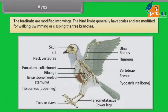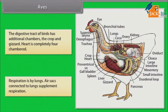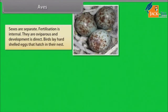The forelimbs are modified into wings. The hind limbs generally have scales and are modified for walking, swimming or clasping tree branches. The digestive tract of birds has additional chambers: the crop and gizzard. Heart is completely four-chambered. Respiration is by lungs. Air sacs connected to the lungs supplement respiration. Sexes are separate. Fertilization is internal. They are oviparous and development is direct. Birds lay hard-shelled eggs that hatch in their nest.